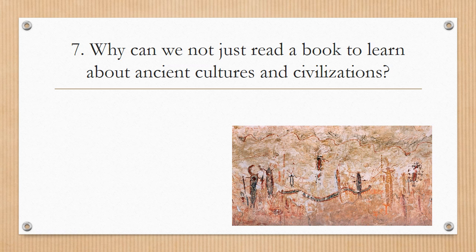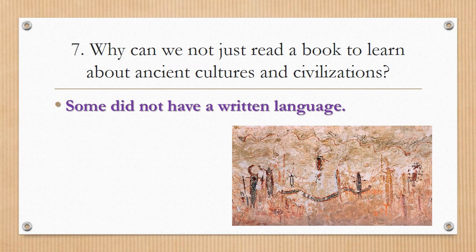Number seven: Why can we not just read a book to learn about ancient cultures and civilizations? The reason is because some did not have a written language. Many ancient cultures and civilizations wrote in pictures, and some did not write at all. The stone pictures painted on cave walls don't have letters or words. As historians, we have to take the artifacts and interpret what they mean. Sometimes we don't know exactly what they meant, but we can look at multiple examples and make an educated guess.